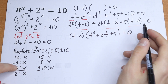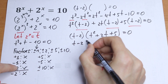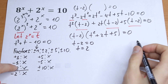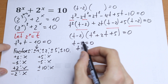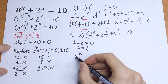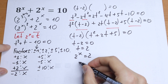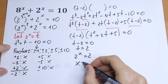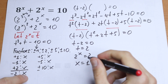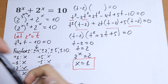We have a product equal to 0, so the first factor gives t minus 2 equal to 0, meaning t equals 2. Going back to our substitution, 2 to the power x equals t, so 2 to the power x equals 2, which means x equals 1. This is the first root of the exponential equation.